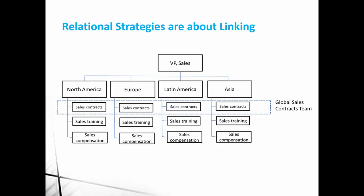Relational strategies are all about linking — how do you connect those different departments so that people can effectively get things done? Imagine a sales division organized geographically with departments in North America, Europe, Latin America, and Asia, and each division has a contracts team, a training team, and a sales compensation team. Wouldn't it be the case that we'd want some consistency between those groups? Maybe there's a problem in one group that somebody else has already solved in another. Have you ever been in an organization where it seemed like you were reinventing the wheel, or the left hand doesn't know what the right hand is doing because there's no coordination between groups?